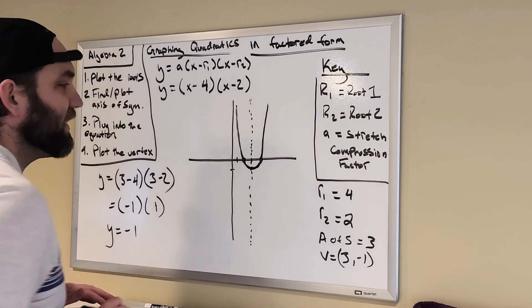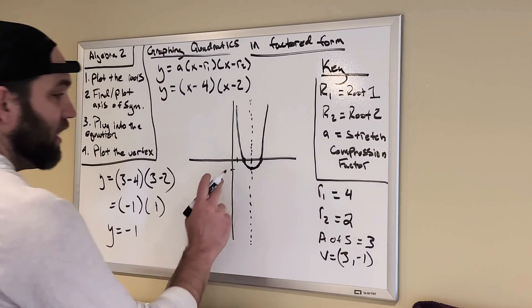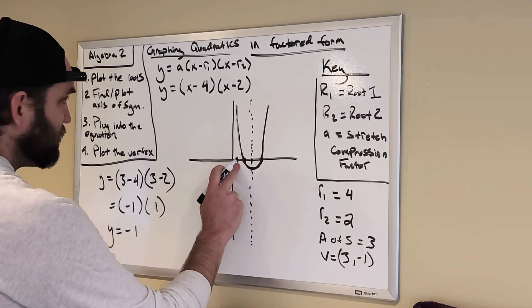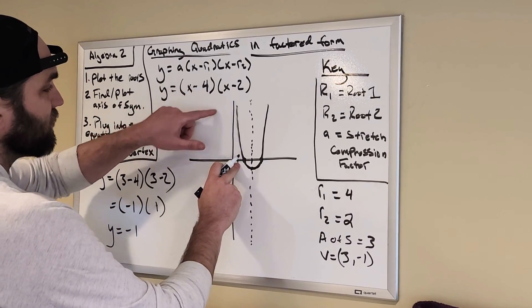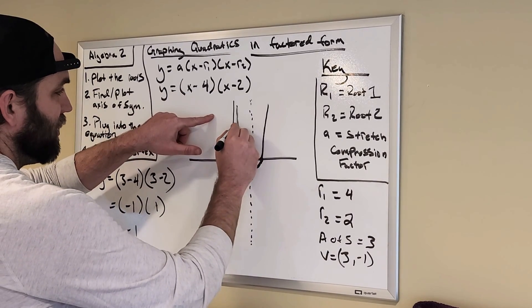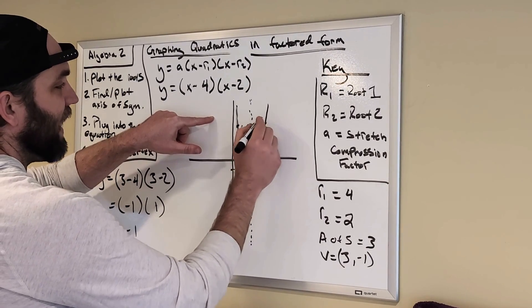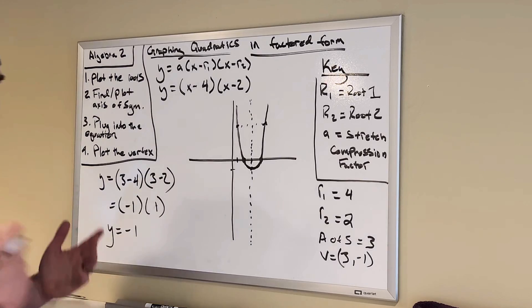If I were to find a couple more points and I wanted to label a couple more points, I would just plug in another number, maybe 1, into the equation, into this equation, solve it, plot it, wherever it lands, and then count how far away from the axis of symmetry it is and plot it on the other side.